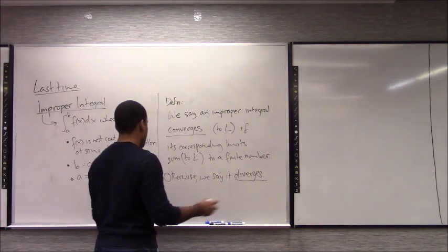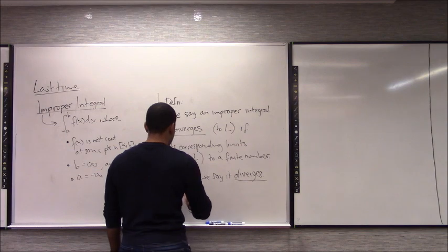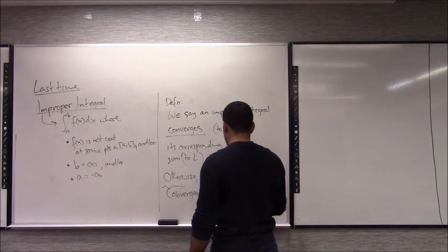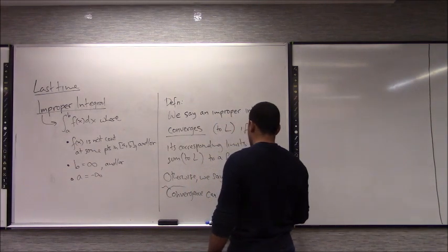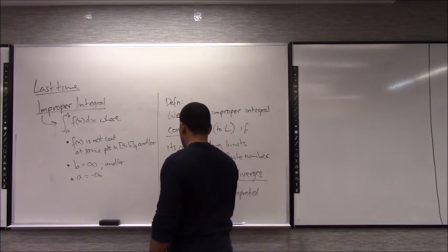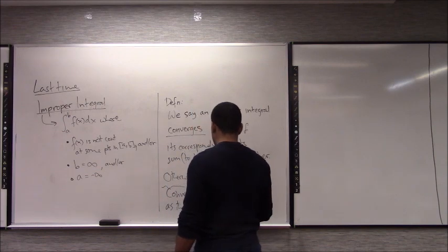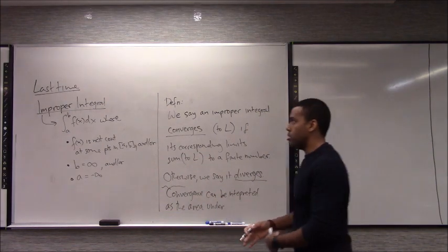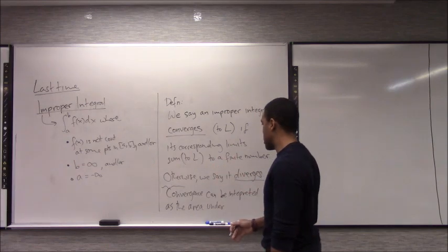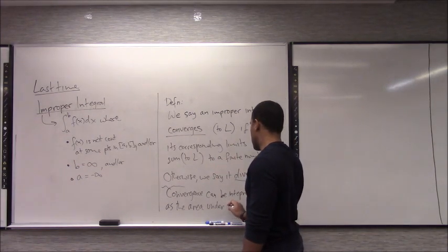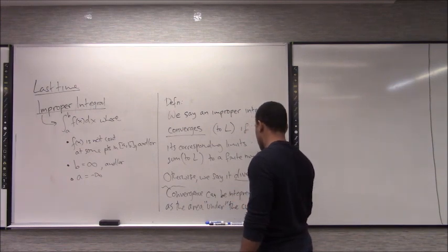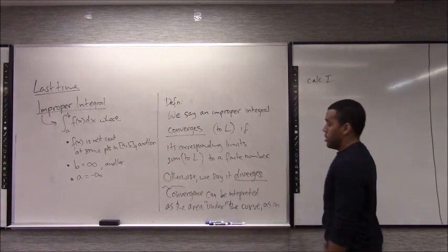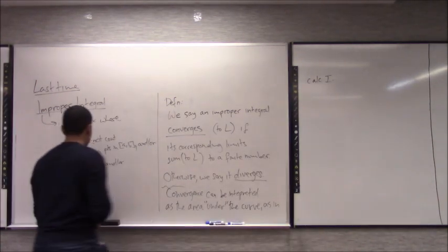It turns out convergence can be interpreted in many ways, because it can be interpreted as the area under the curve. So we can still talk about this as an area, though it's a little more vague when one of these issues arises. But we can actually define convergence to be the area under the curve. Those are some important terminology.